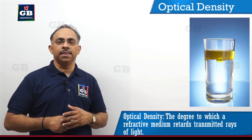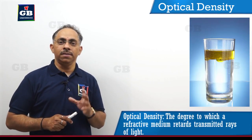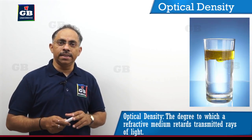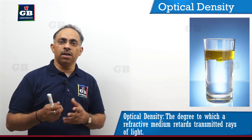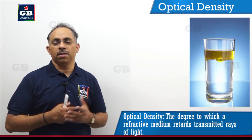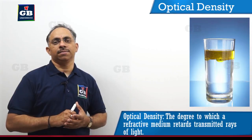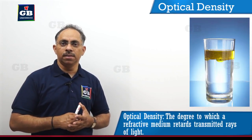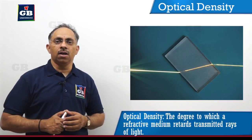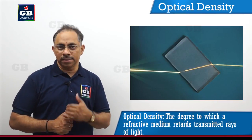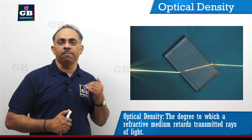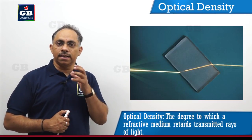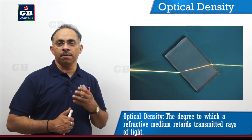When I say optical density, optical density is different from physical density. Physical density can be measured by the ratio of mass to volume. But optical density cannot be measured like that. When I refer to optical density of a medium, it is given by the measure of how much the light ray bends when it is going from air into that particular medium. So that indicates the optical density of that particular medium.